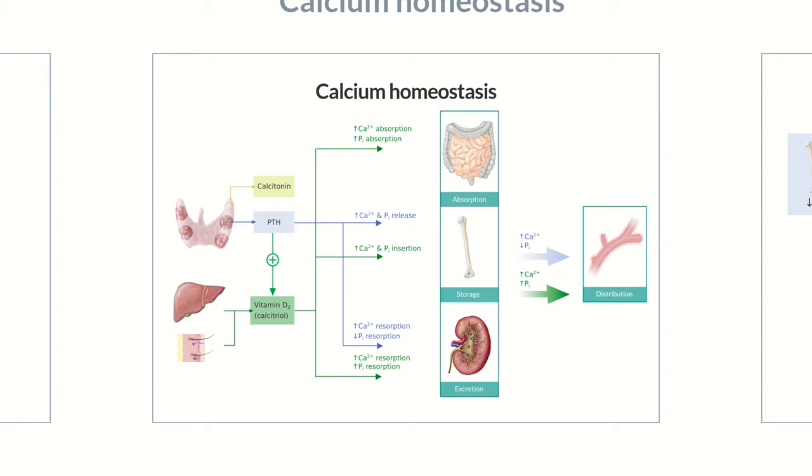The body registers whether the right amount of extracellular calcium is present using calcium-sensitive receptors. These are located primarily in renal tubular cells and the parathyroid gland. If there's an increase in serum calcium, for example, in hypercalcemia, this inhibits PTH secretion but stimulates the release of calcitonin.